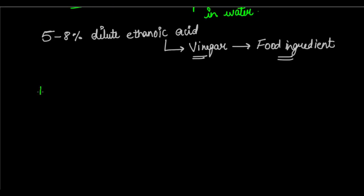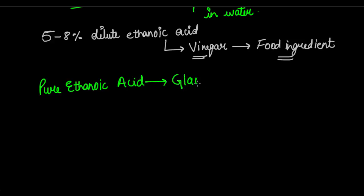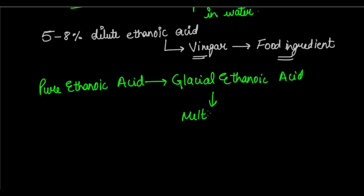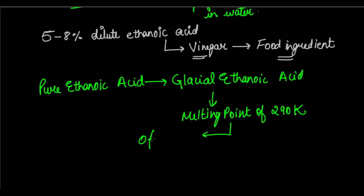Pure acetic acid, or the purest form of ethanoic acid, is called glacial acetic acid. It has a melting point of 290 Kelvin and it often freezes in winter — hence it is called glacial.